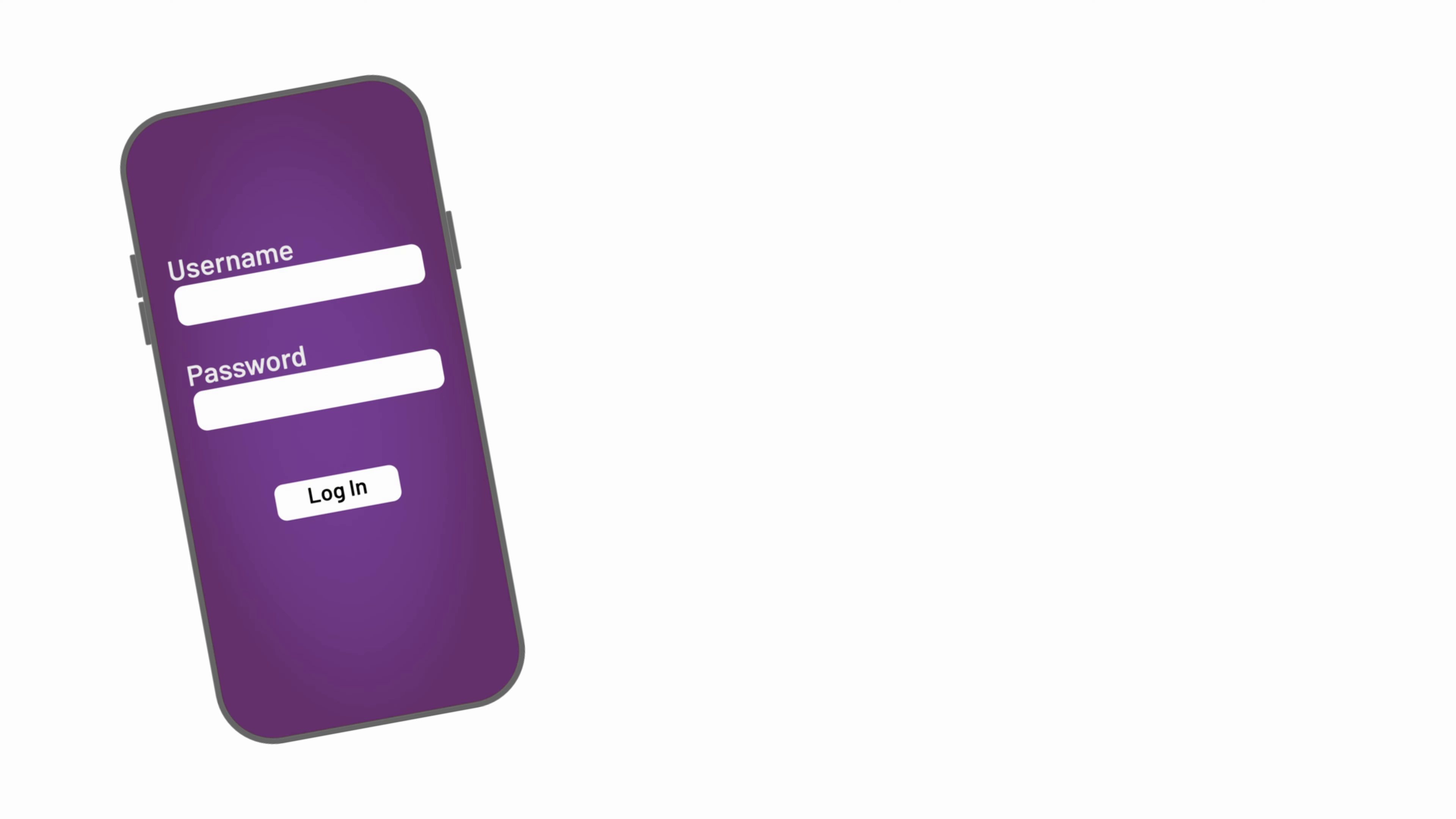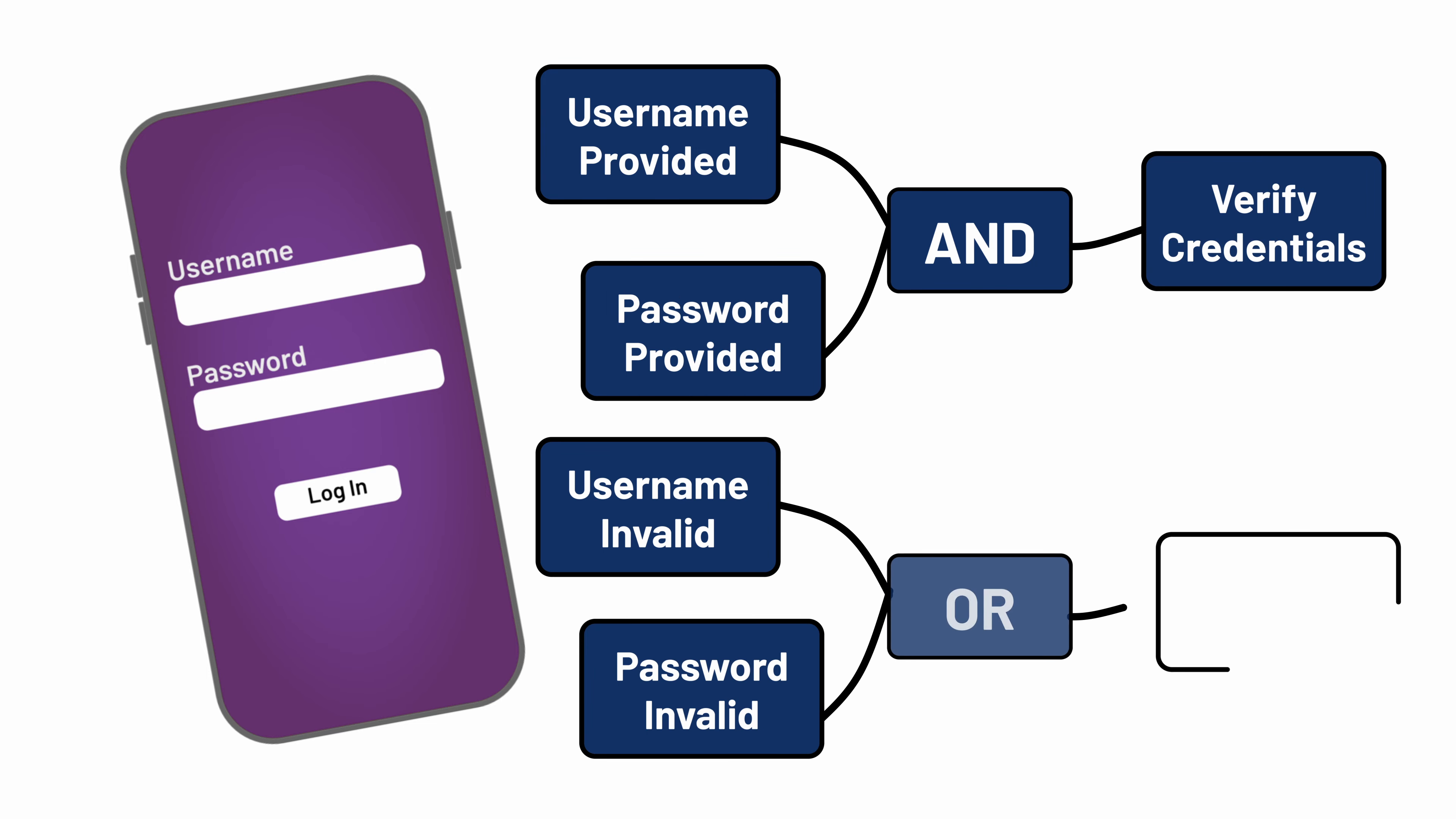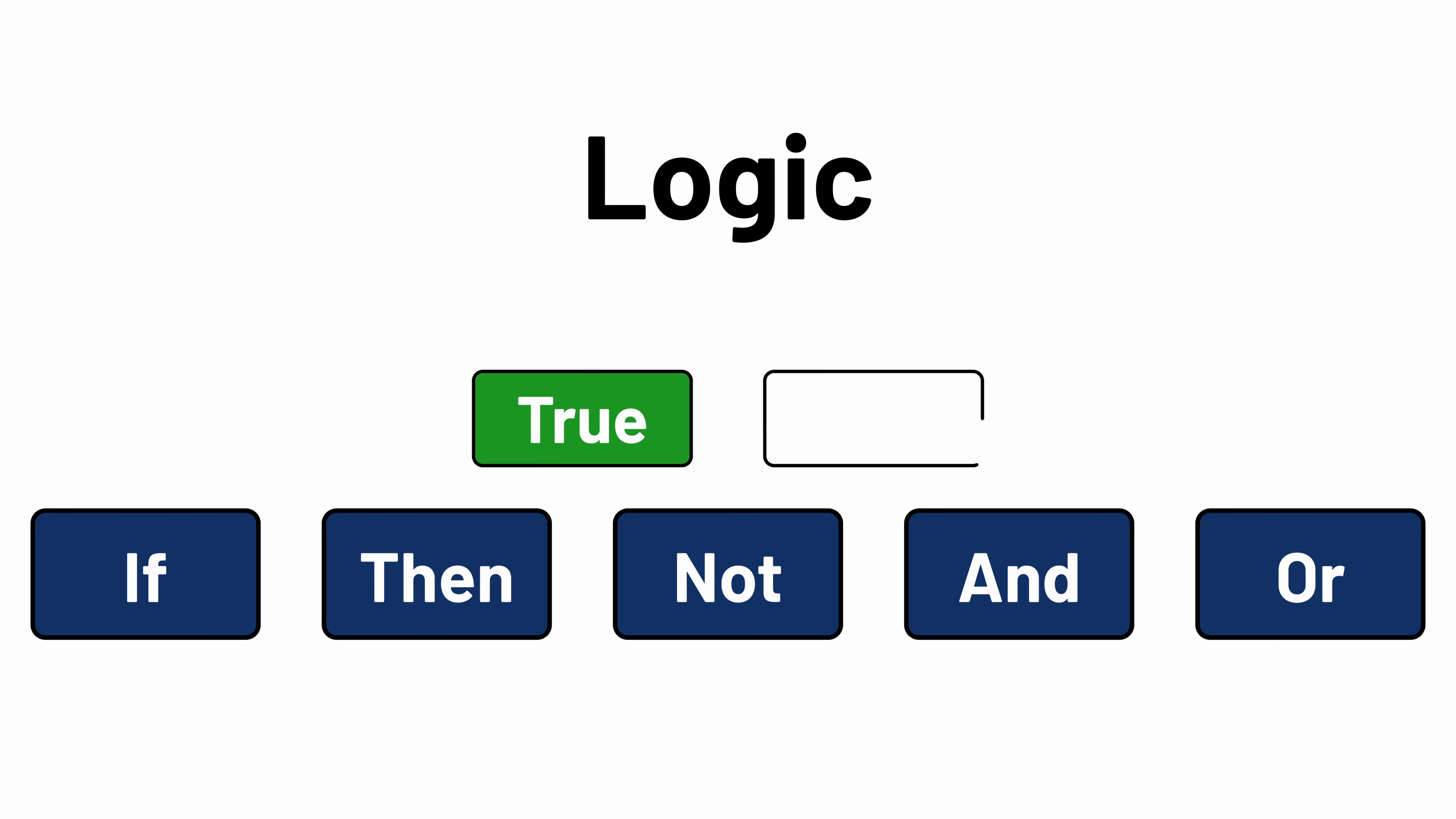The login button on an app shouldn't work until the user types in both a username and a password, and if one or the other is wrong, then the user should see an error. This kind of reasoning—if, then, not, and, or—is logic, and it's what ensures computers know what to do and when, based on whether statements are true or false.